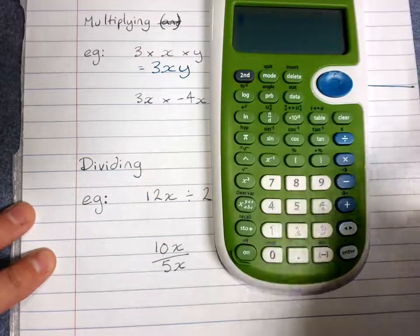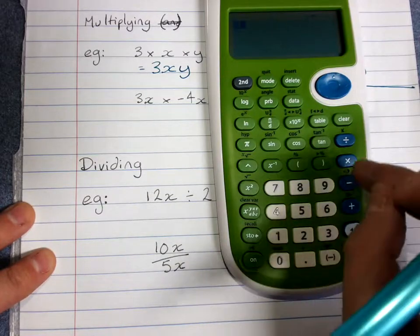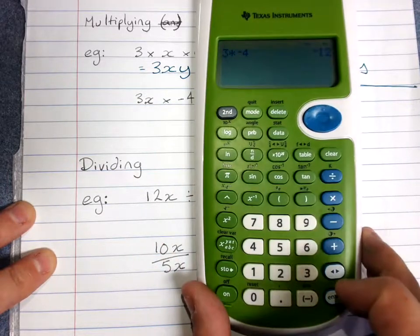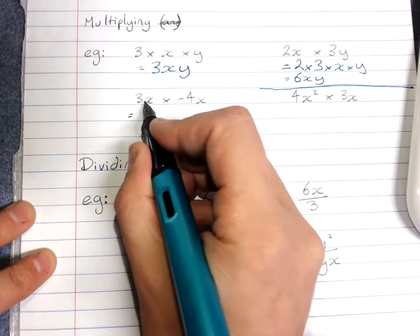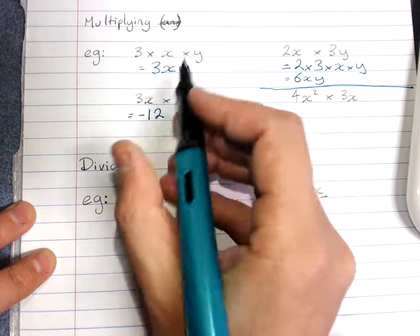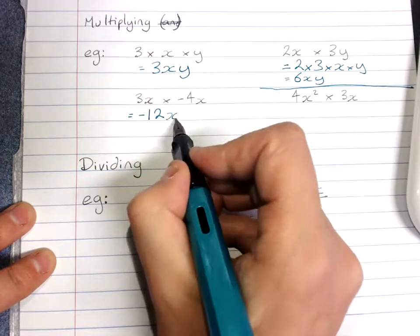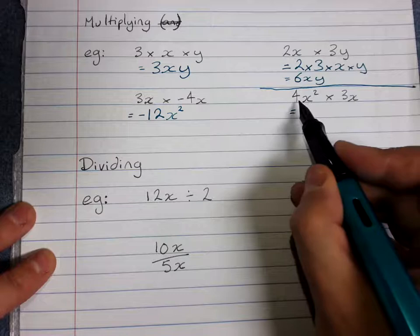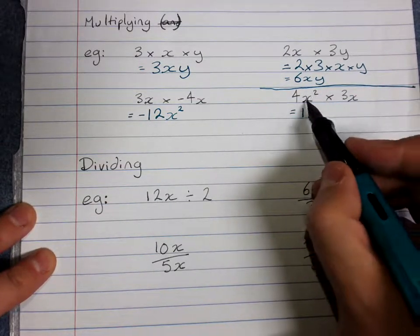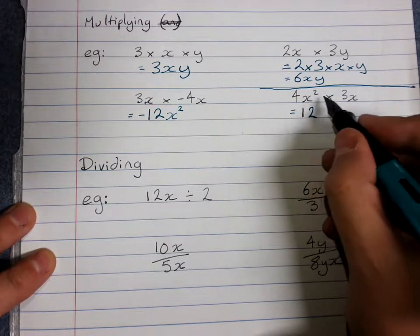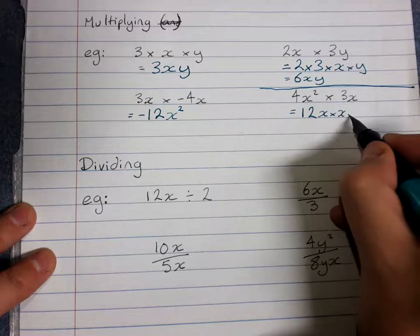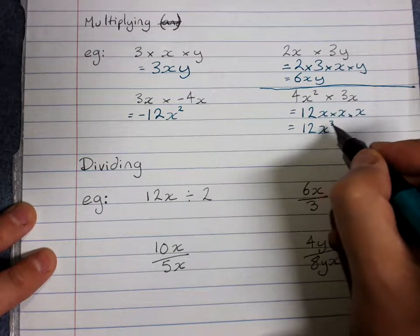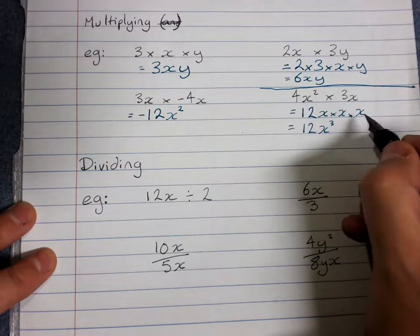Now if you're not sure on timesing the numbers, use your calculator. 3 times negative 4 equals negative 12. So you multiply the big numbers out the front of them. Negative 12. And then x times x is x squared. So this one here, 4 times 3 is 12. Now if you're not sure about x squared times x, you could just write it as x squared is x times x times another x. And you can see really clearly that that means it's going to be 12x cubed. It's the number of x's that are timesed together. Because timesing is different to adding.